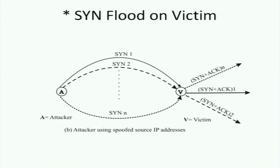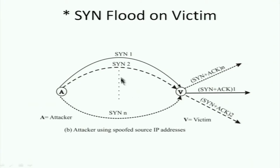So how do we subvert the working of the system — how do we launch a DoS or DDoS attack? The typical strategy is to flood the victim with SYN packets. Almost typically, the attacker will use spoofed source addresses so he cannot be traced. The victim responds to each SYN packet with an acknowledgement packet, but because the source address has been spoofed, those acknowledgements go to some arbitrary location, not back to the attacker.